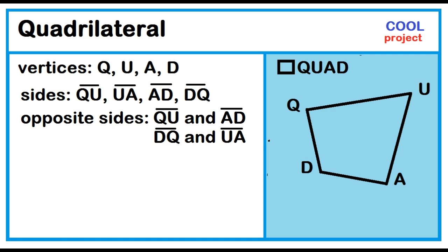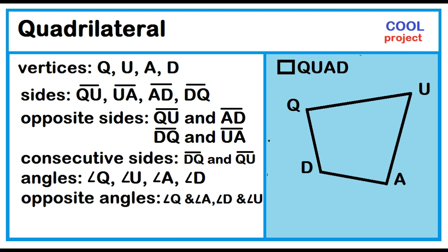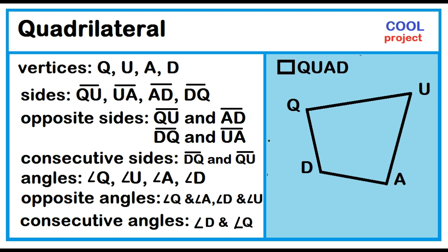A pair of consecutive sides is segment DQ and segment QU. The angles are angle Q, angle U, angle A, and angle D. The opposite angles are angle Q and angle A, and angle D and angle U. A pair of consecutive angles is angle D and angle Q. The diagonals are segment QA and segment DU.